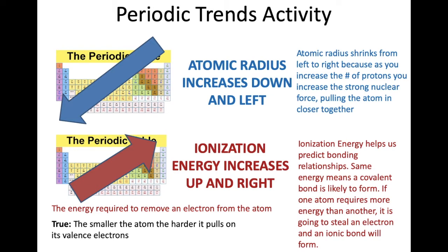For ionization energy, it increases up and to the right, and it helps us predict bonding relationships. When you have the same type of energy, that means you have a covalent bond. If one atom requires more energy than another, it's going to steal and take away those electrons, and you're going to have an ionic bond being formed. It is true that the smaller the atom, the harder it is to pull its valence electrons away. If you have any further questions on that, please let me know.